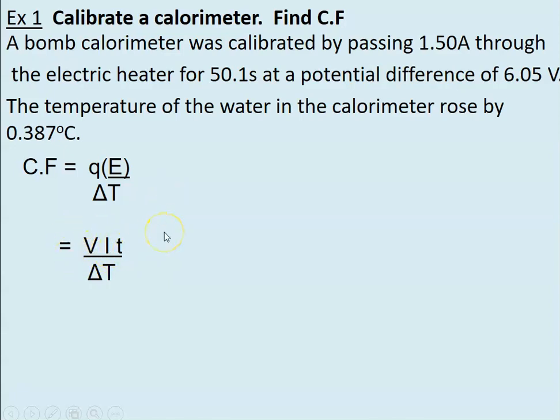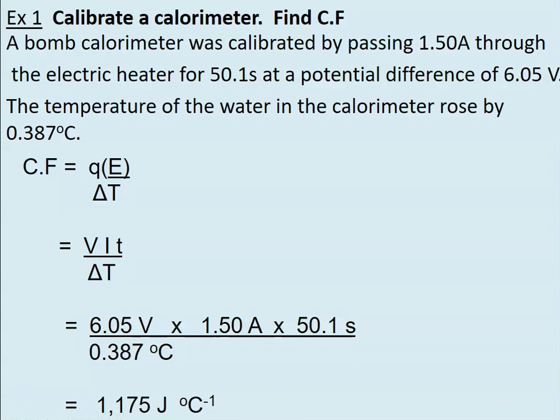VIt gives you your joules. This is how many joules for that many degrees. So if you calculate this, then you can find how many joules for one degree. Normally for bomb calorimeters it's quite large, so you could convert that to kilojoules.